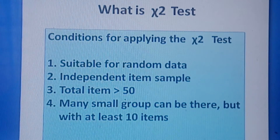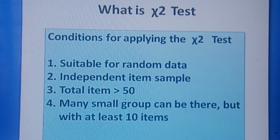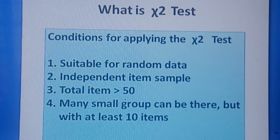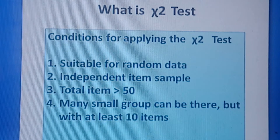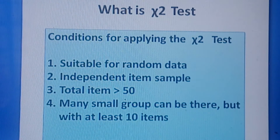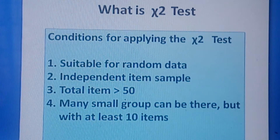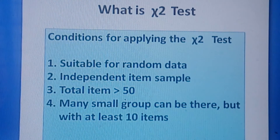To summarize the conditions for applying chi-square test: data should have been collected at random; the items constituting the sample should be independent; the total number of items should be at least 50; and no group should contain less than 10 items. If all four conditions are satisfied, we can apply the chi-square test.